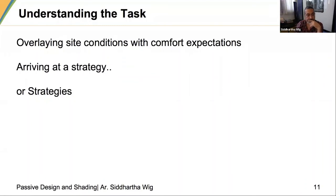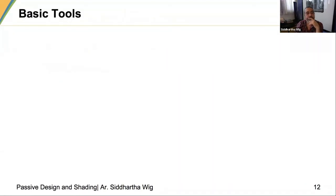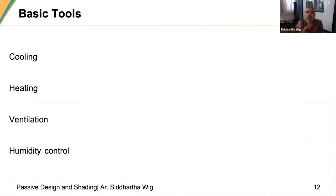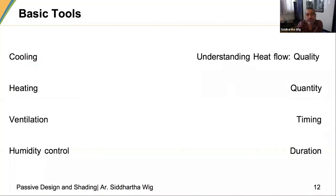The basic tools are: you either need to cool, heat, ventilate or control humidity in the building. We must look at all these aspects. Most of the time one priority works, but you must be careful because the combined effect of all of them is what we will eventually evaluate.